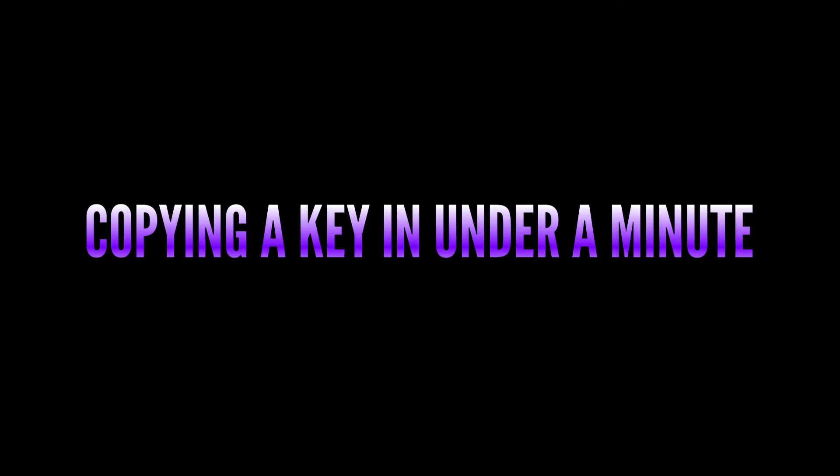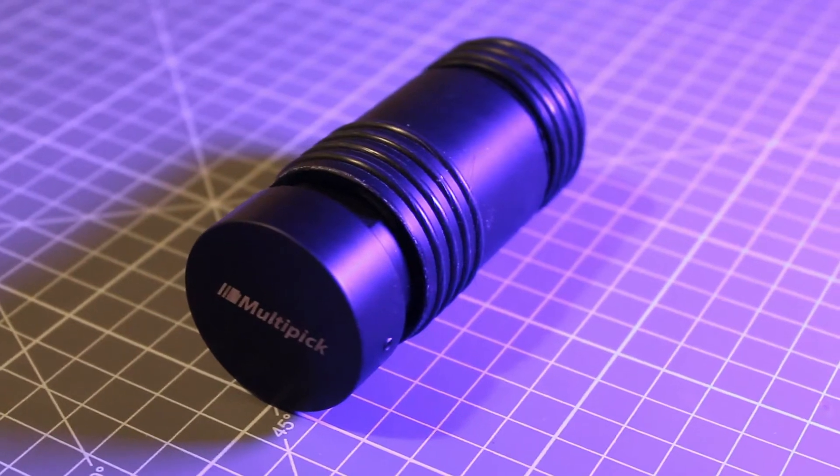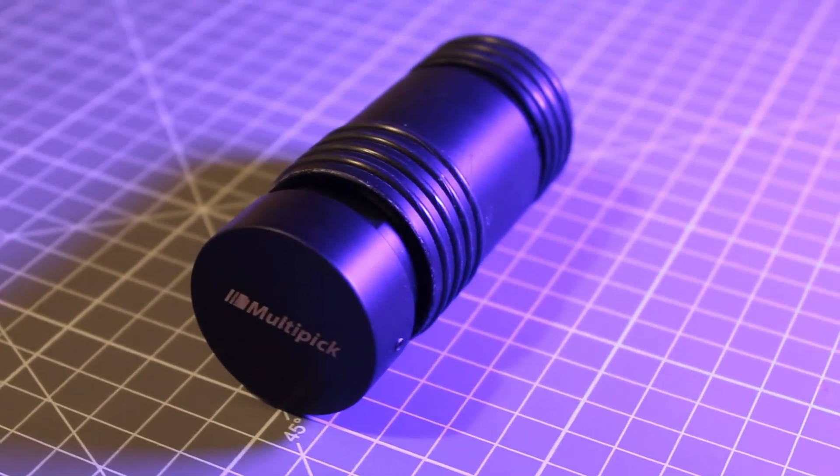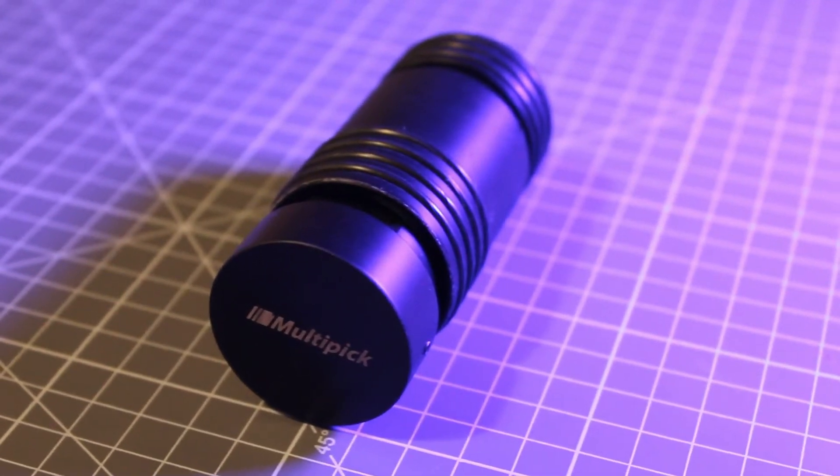This is a short video about casting keys using the Multipick key copier. This is the actual device, which is nothing more than two halves of a mold which fit together, allowing you to take an impression of a key and cast a copy of it.